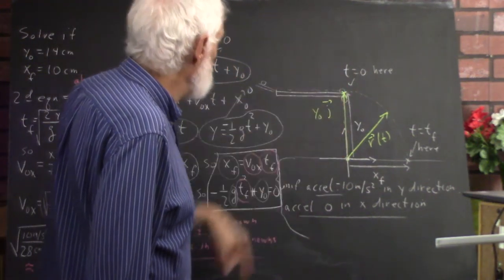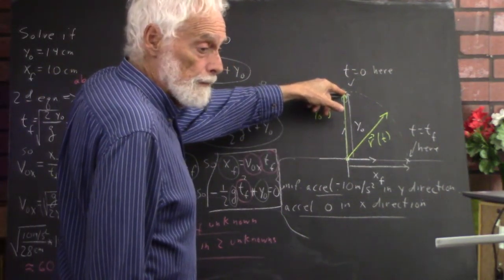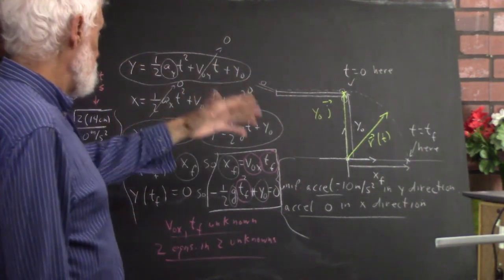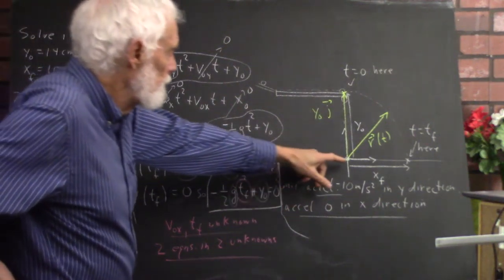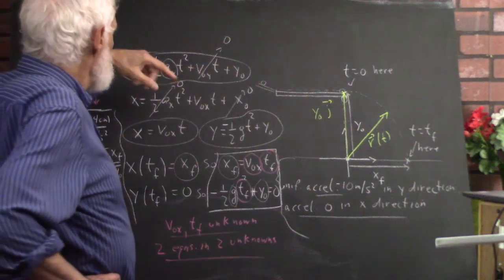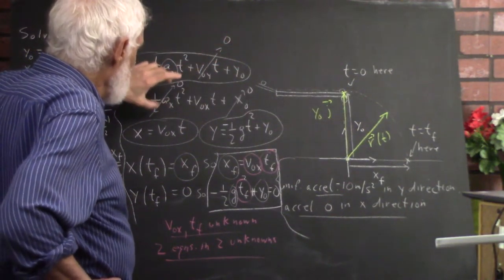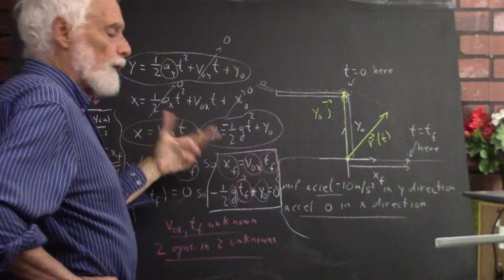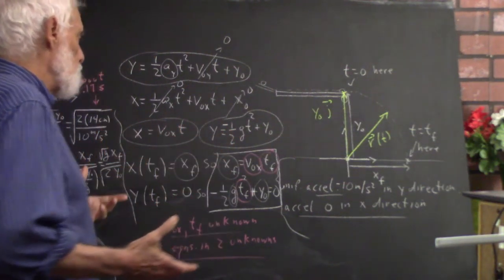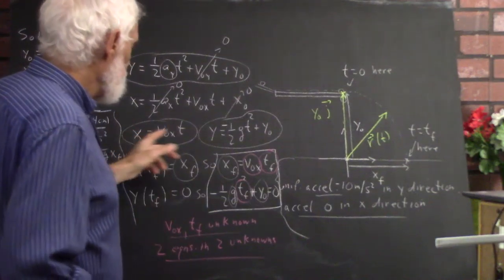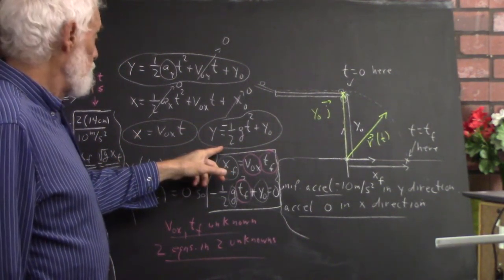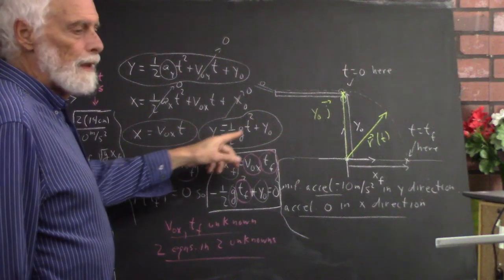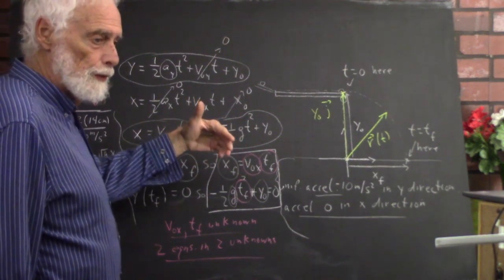We couldn't put the origin up here and everything would have worked out fine — we'd have gotten the same result for time of fall and velocity. But we chose this because it's a little more convenient. With these terms being zero, our equations end up much simpler. This is the general case for projectile motion subject to constant vertical acceleration and zero horizontal acceleration.